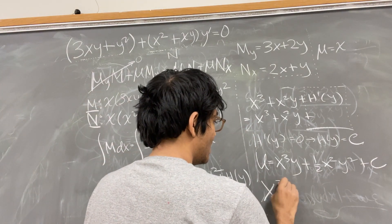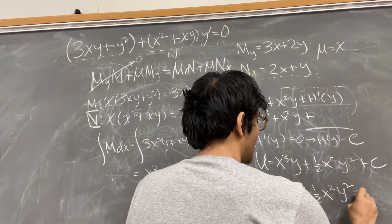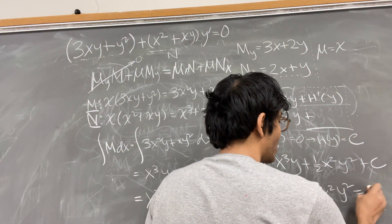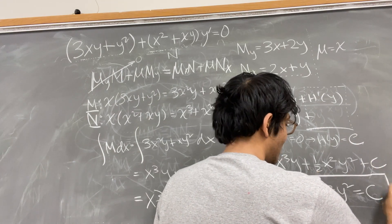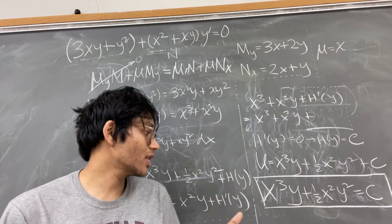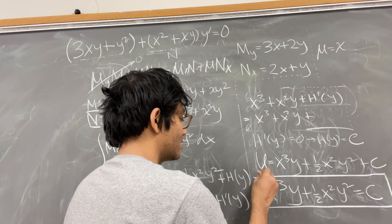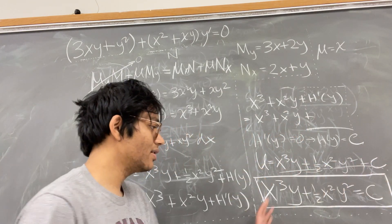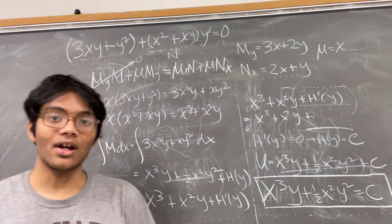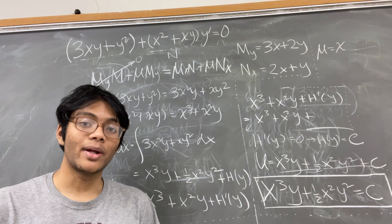Our final potential function is u = x³y + (1/2)x²y², and we set it equal to a constant c. When you take the gradient of this potential function and dot it with the velocity of the position vector, the right-hand side goes to zero. So x³y + (1/2)x²y² = c is our final answer. Thanks for watching this episode of Differential Equations, a live lecture from the City College of New York!